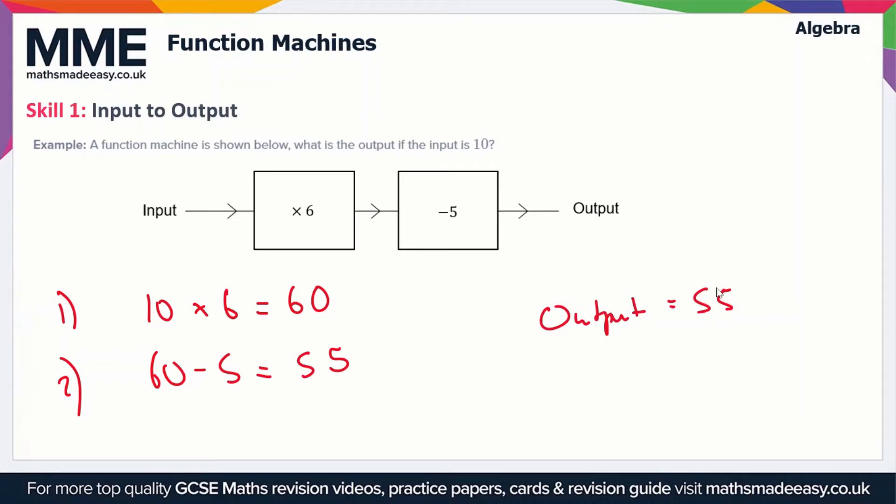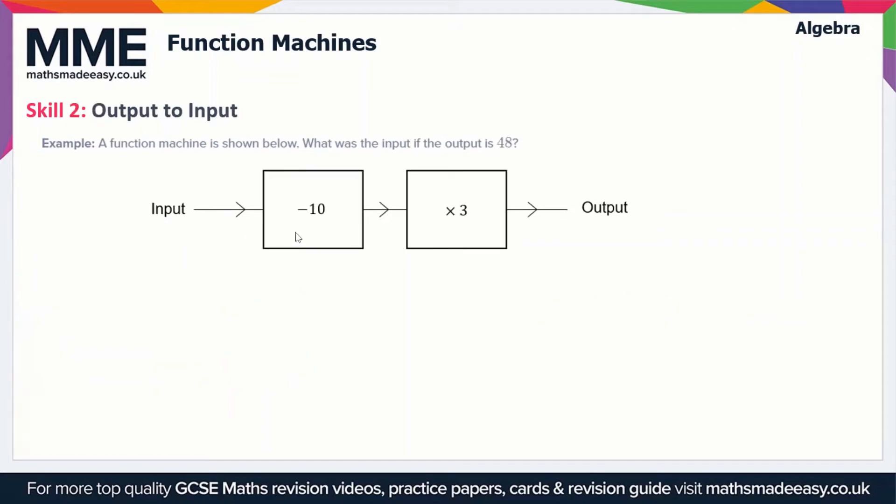So it's straightforward enough. What about if we have an output to input? Here, a function machine is shown below. What was the input if the output is 48?